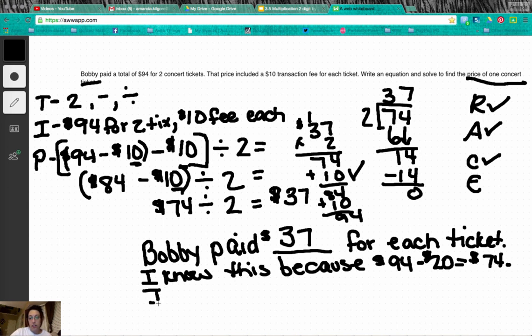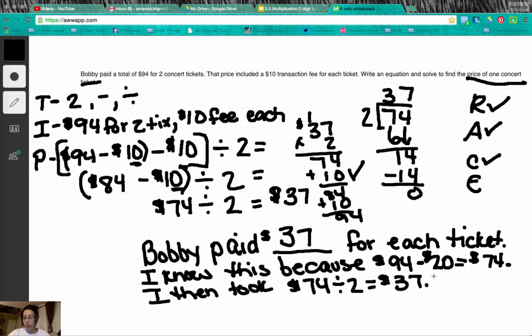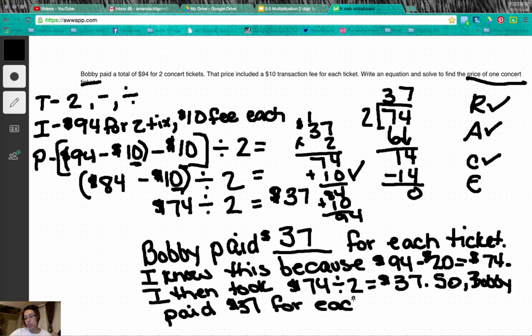I then took $74 divided by 2 equals $37. So let's wrap it up. Bobby paid $37 for each ticket. And that is our race answer we have explained.